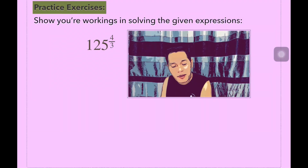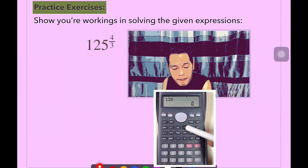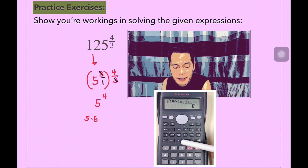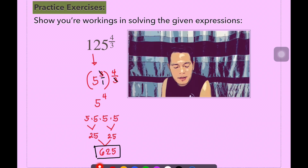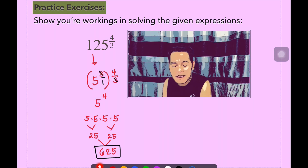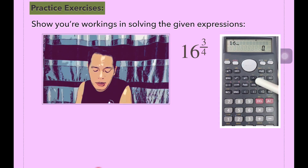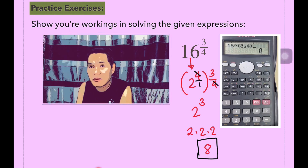Next, we are going to simplify expressions with fractional exponents. The first one is 125 to the power of 4 over 3. By getting the factors of 125 — which is a perfect cube — we have 5 to the power of 3. We do cancellation by multiplying power to a power, and the remaining is 5 to the power of 4, which is equal to 625. On the other side, we have 16 to the power of 3 over 4. We express 16 as 2 to the power of 4, then multiply the exponents and cancel. This gives 2 to the power of 3, which equals 8.